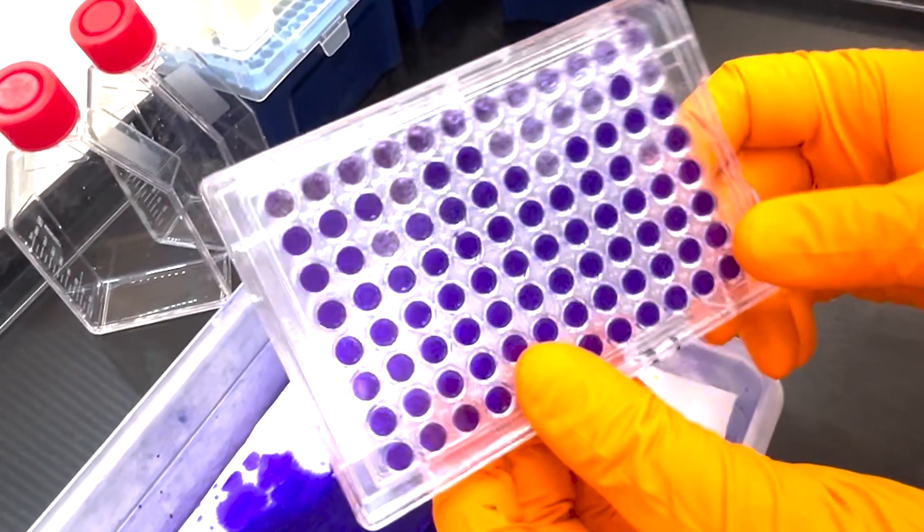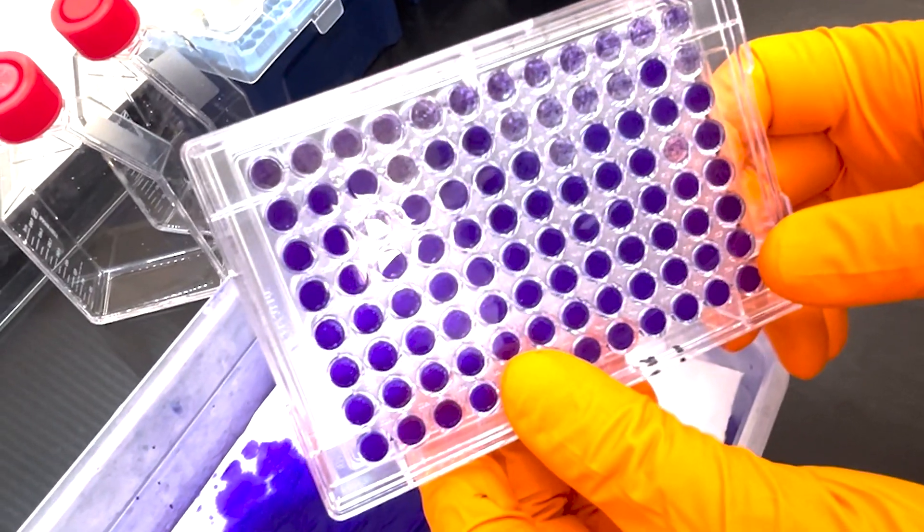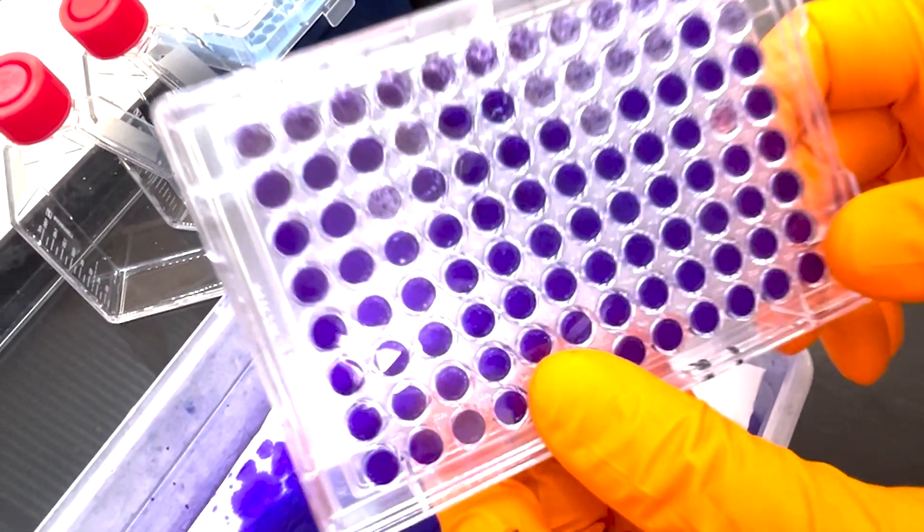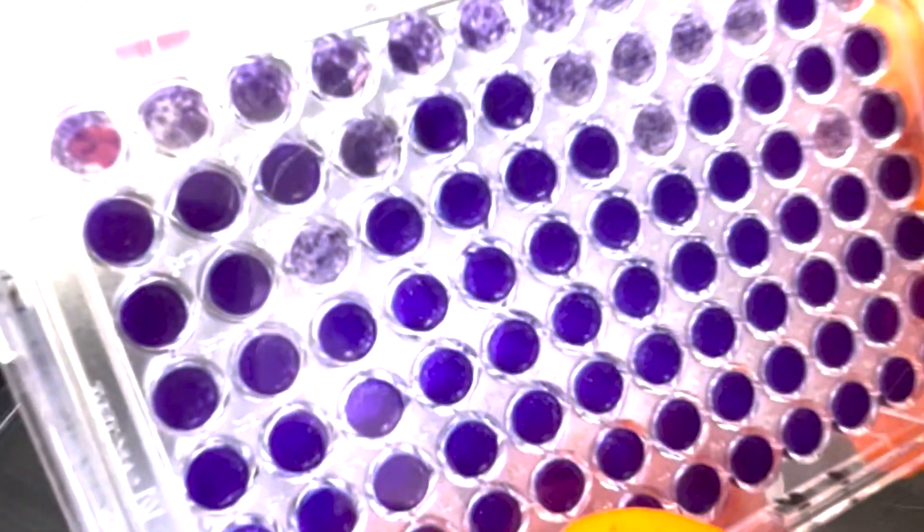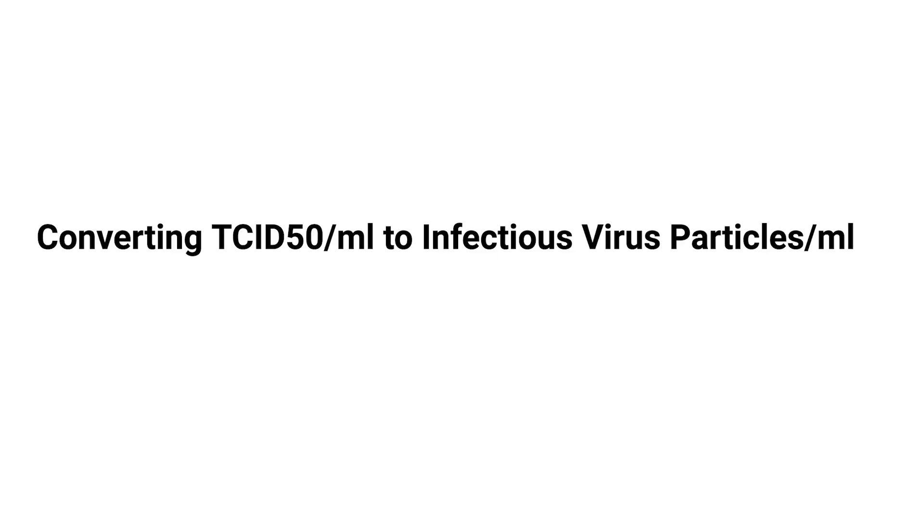In our previous videos, we've gone through how to perform a TCID-50 assay and how to analyze it using two different methods. Today we're going to explore how to convert TCID-50 per milliliter values to estimate the number of infectious virus particles in our sample.